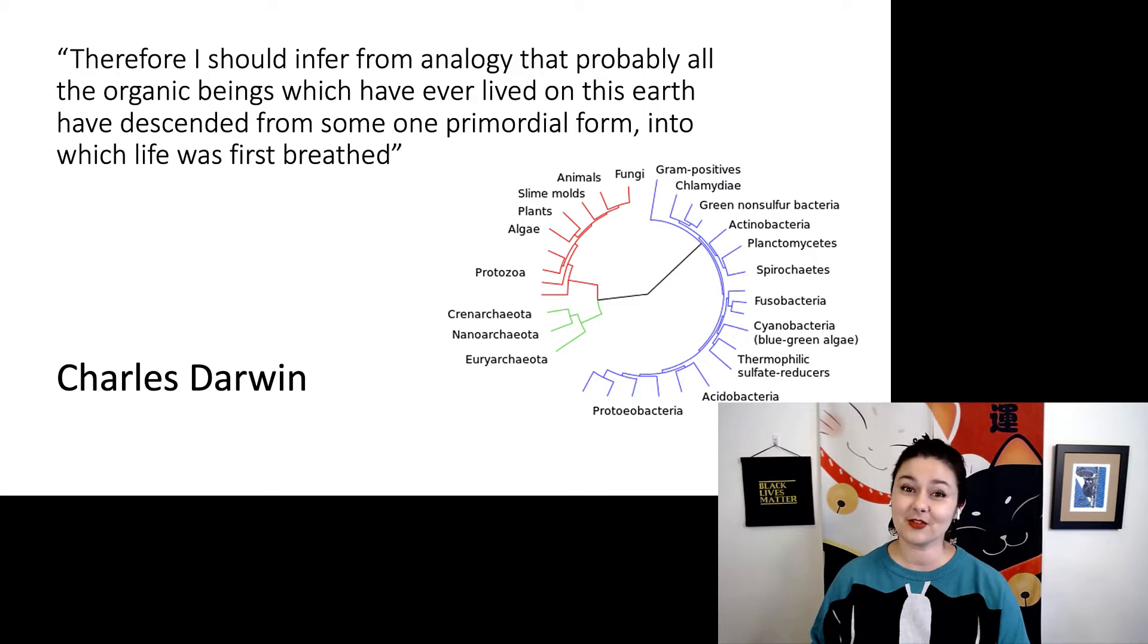Let's read one of my favorite quotes from Darwin. Therefore, I should infer from analogy that probably all the organic beings which have ever lived on this Earth have descended from some one primordial form into which life was first breathed. Darwin is so quotable, but this is a beautiful way to describe that we do have one single origin of life based on this theory of common descent.